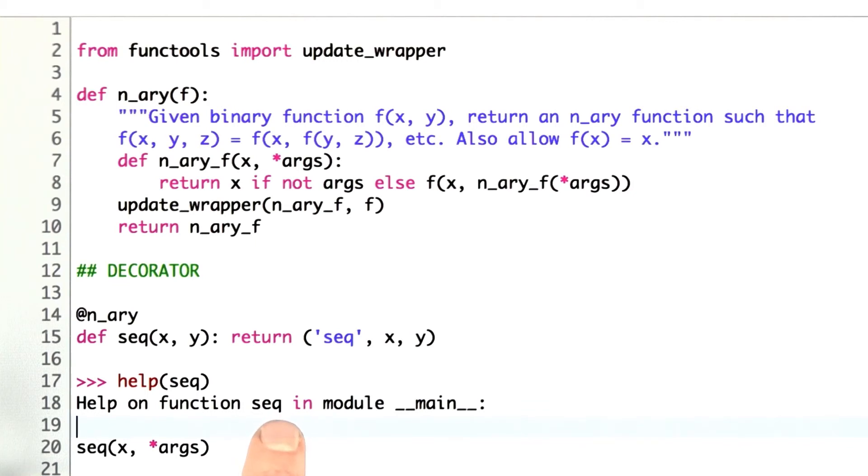Notice that we may be violating the don't-repeat-yourself principle here. This n_ary function is a decorator I'm using to update the definition of sequence. Within my definition of n_ary, I had to write down that I want to update the wrapper. But it seems like I'm going to want to update the wrapper for every decorator, not just for n_ary. I don't want to repeat myself on every decorator I define.